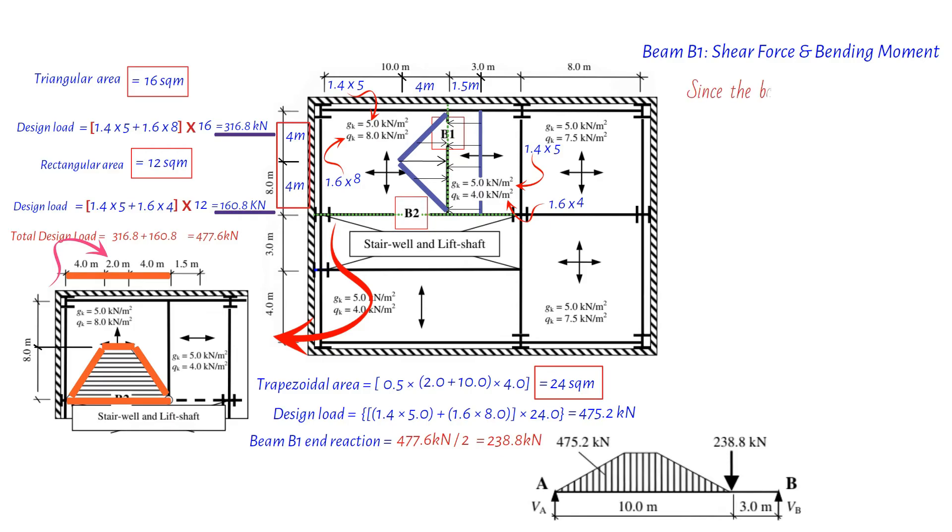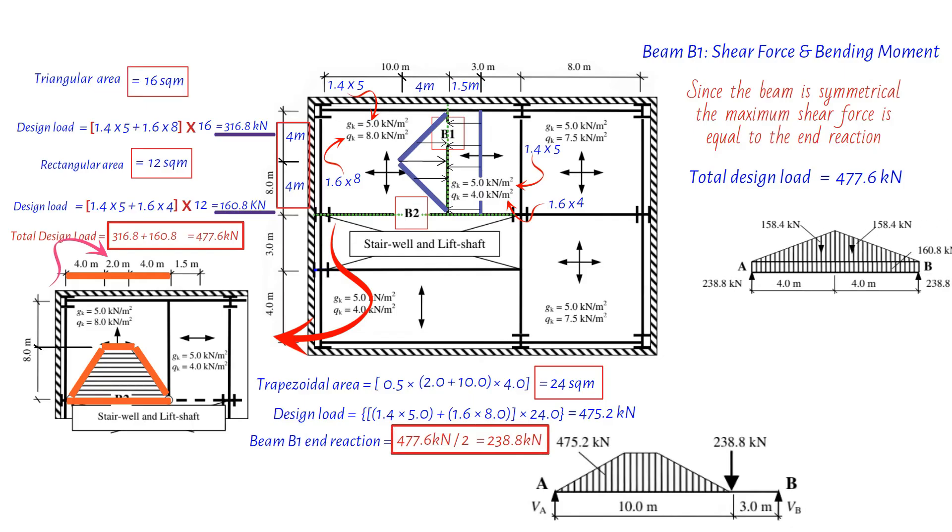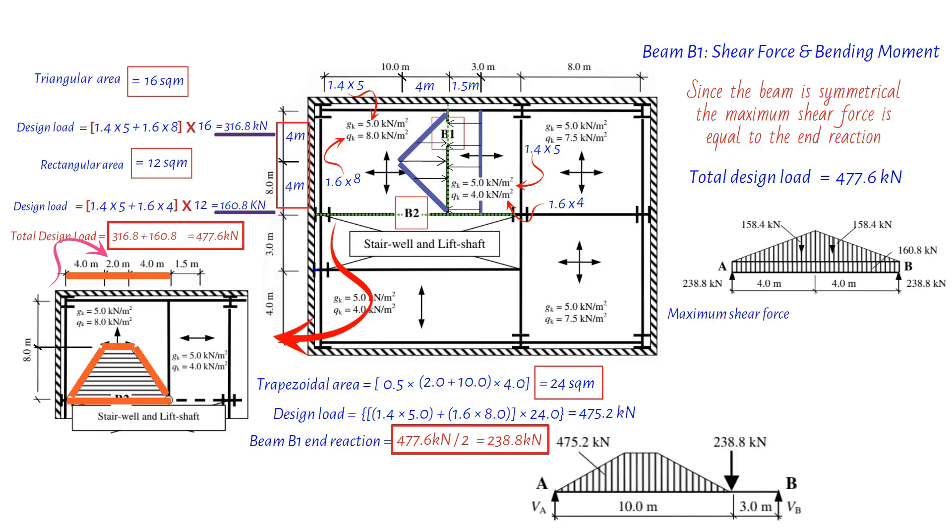Since our beam is the same on both ends, what we call symmetrical, finding the maximum shear force is pretty straightforward. We just take the total design load, which we already figured out as 477.6 kilonewton, and then split it in half. That gives us 238.8 kilonewton as the maximum shear force. This is like saying, this is the most push the beam can take at any one point before it says enough.